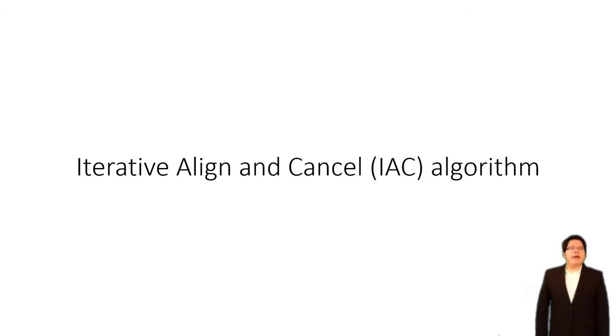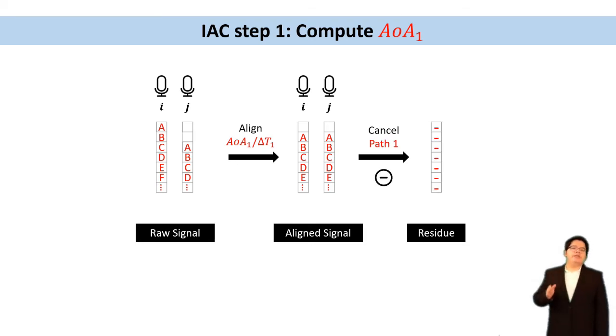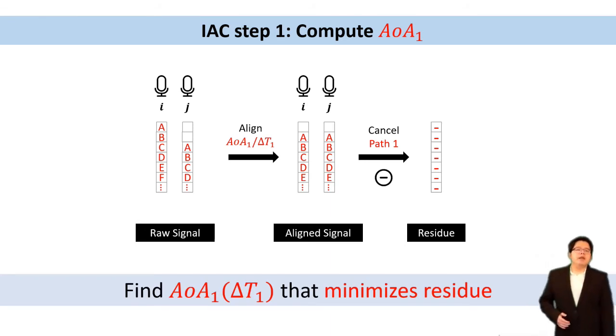Here, I'm going to introduce our core algorithm, Iterative Align and Cancel IAC algorithm. It takes the received signal as the input and outputs the AOA of each pass. Solving the direct pass AOA is easy. This part is similar to the conventional AOA algorithm that we just mentioned. With microphone pair IJ, we find the delta T1 delay between the microphones. If we find the correct delay, signals from two microphones will be identical, so we subtract one from another, and the residual will be zero. We can just estimate the delta T1 by a correlation and infer the AOA that minimized the residual.